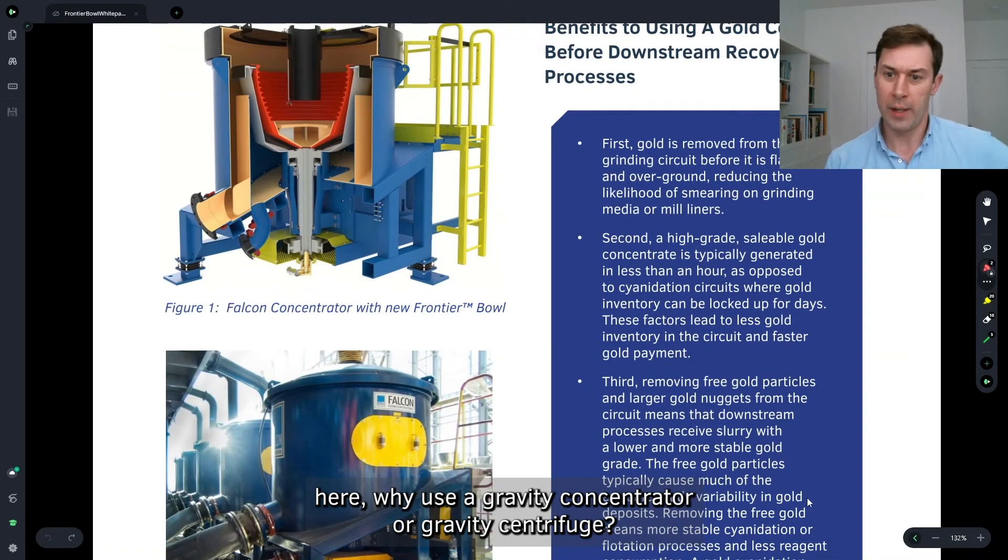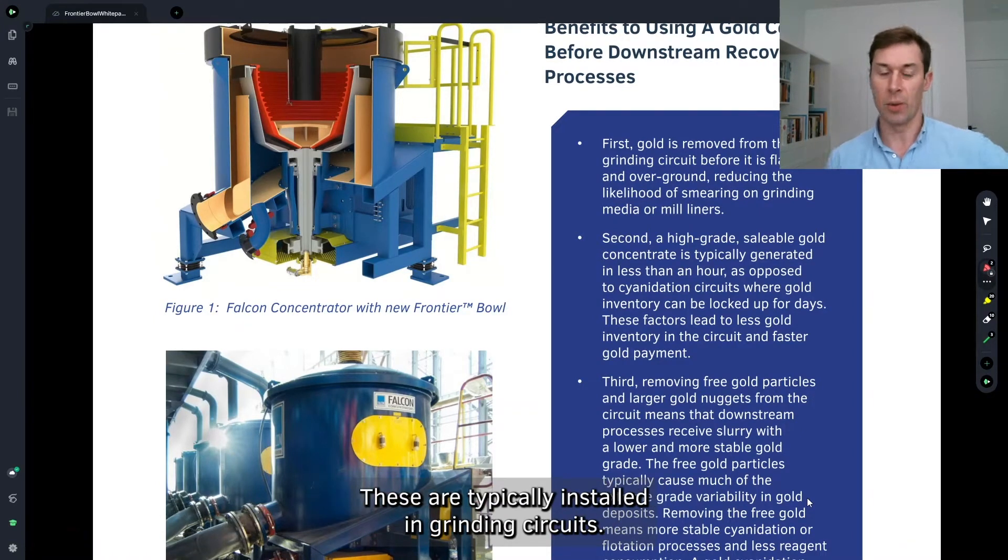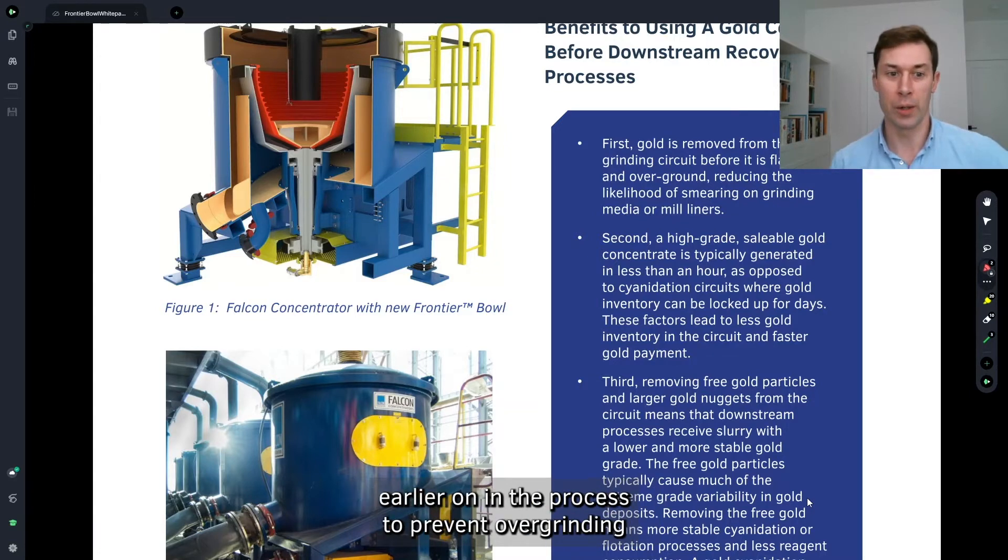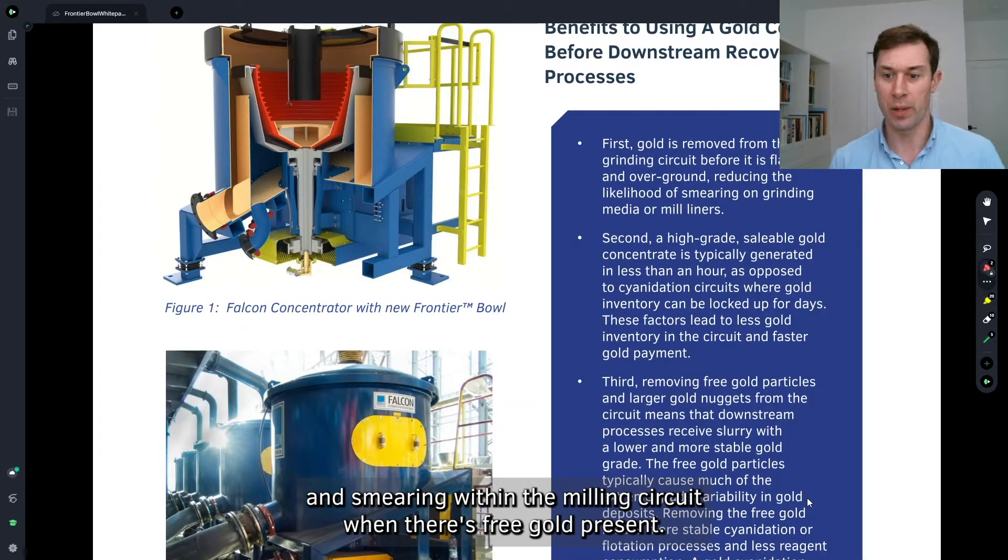So starting here, why use a gravity concentrator or a gravity centrifuge? These are typically installed in grinding circuits. It allows gold to be removed from the grinding circuit earlier on in the process to prevent overgrinding and smearing within the milling circuit when there's free gold present.